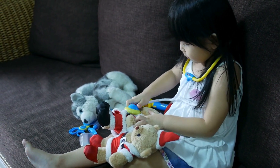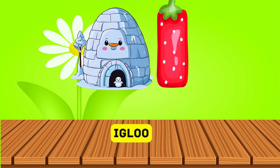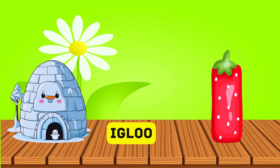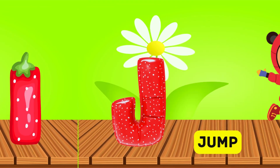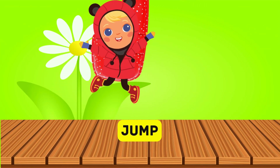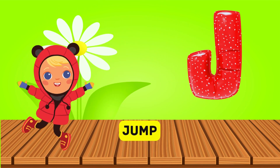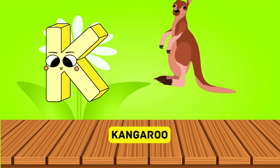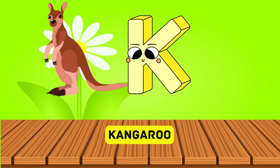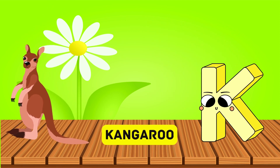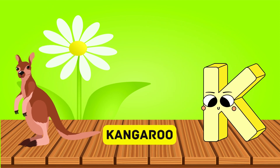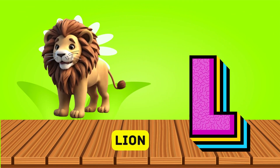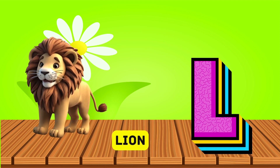I is for igloo, i-i-igloo. J is for jump, j-j-jump. K is for kangaroo, k-k-kangaroo. L is for lion, l-l-lion.